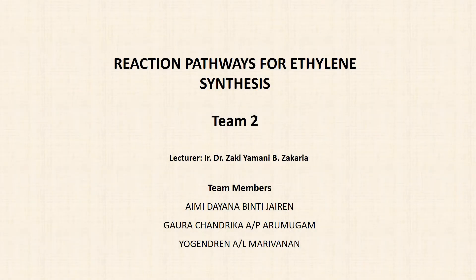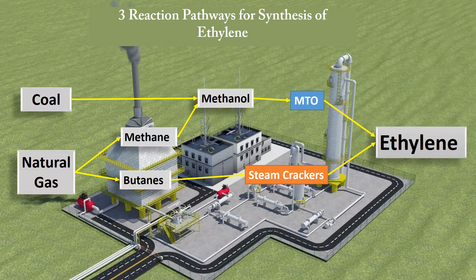A very good day to Dr. Zaki and my fellow friends. We are from team 2 and today we are going to present the direction pathways for ethylene synthesis. My name is Yoh Gendron and my team members are Aimee Dayana and also Gowra Chandrika. There are three main direction pathways for the synthesis of ethylene: first from coal, secondly from methane, and finally from naphtha.